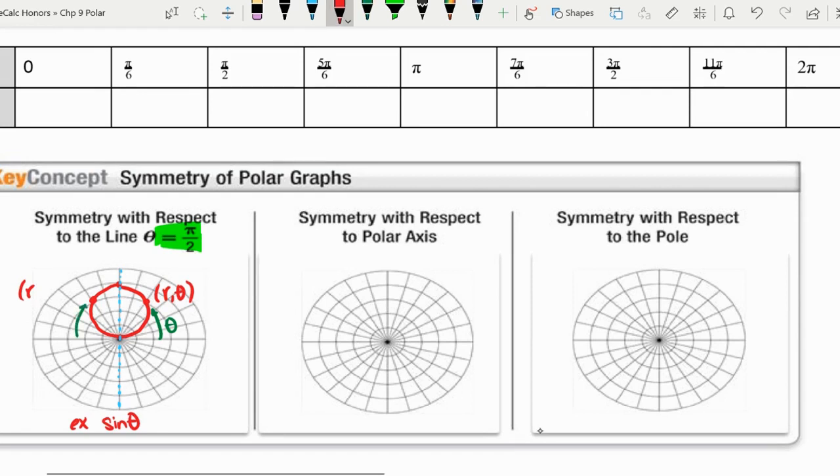We could call this point over here r pi minus theta. So if it has the point r theta and r pi minus theta, let's say like r 30 degrees and r 150 degrees.